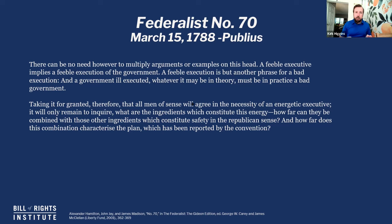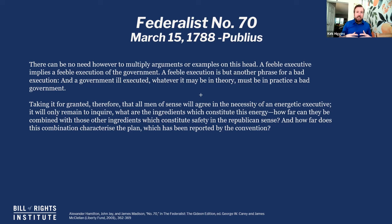Immediately in the next paragraph — and these are just excerpts, so I recommend you read the whole paper — Publius says a feeble executive implies a feeble execution of government. A feeble execution is but another phrase for a bad execution. And a government ill-executed, whatever it may be in theory, must be in practice bad government. Essentially, if you don't have a government that can take charge, make decisions, and make things happen, you have a weak government. Not only is that ineffective — it's actually worse than ineffective, because that weakness can allow corrupting influences to come into society and exert power in ways that are destructive to the liberties we're trying to protect.